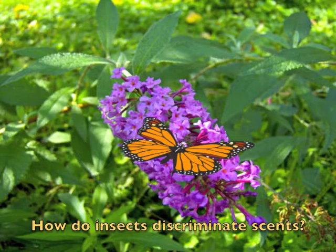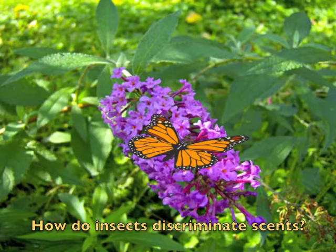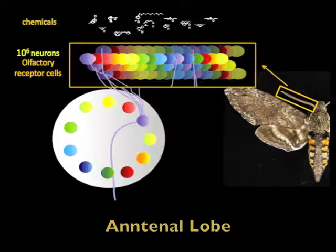An outstanding question in neurosensory systems is to understand how do insects discriminate scents? Insects, such as moths, sense chemicals with receptors on antennas.